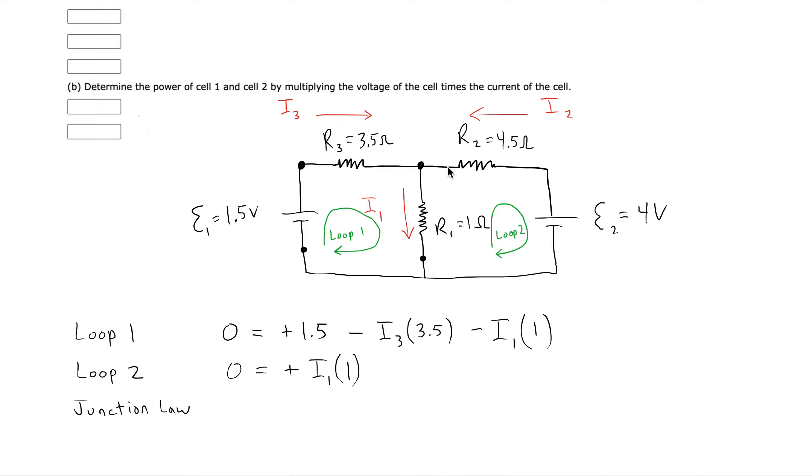Alright, then I go to R2. But I see that we're going against current once again. So we want to add I2 times the 4.5 ohms.